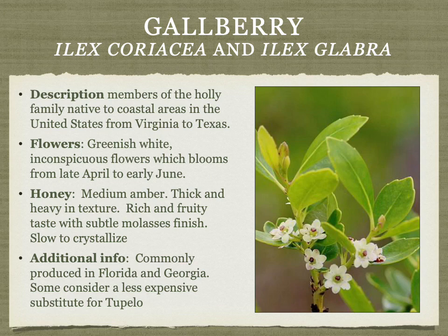Gallberry comes from two species of holly found in the coastal US. The honey is medium amber, thick and heavy in texture and mouthfeel, with a rich fruity taste and a molasses finish. It's relatively slow to crystallize and is sometimes considered a less expensive substitute for tupelo.